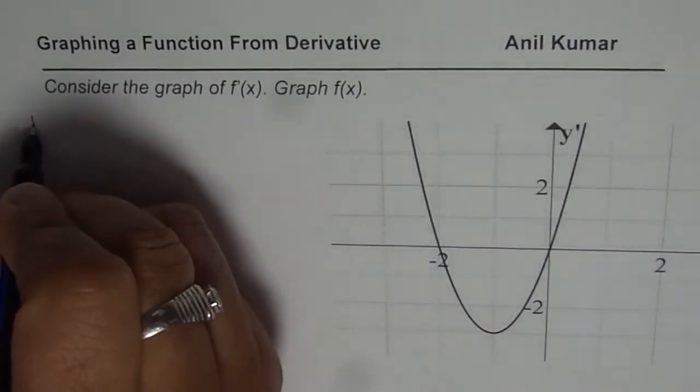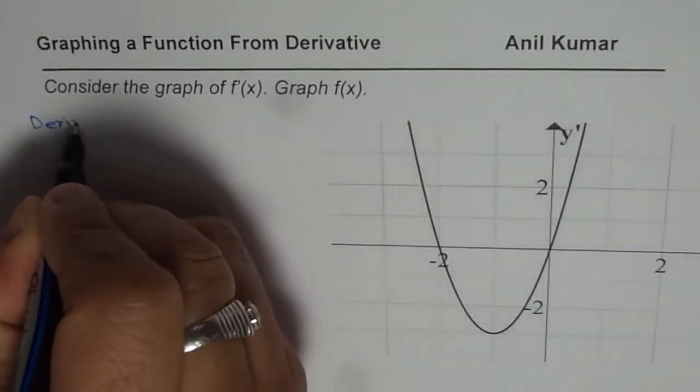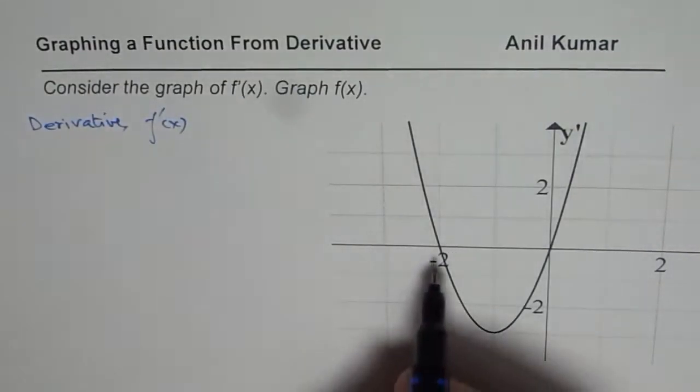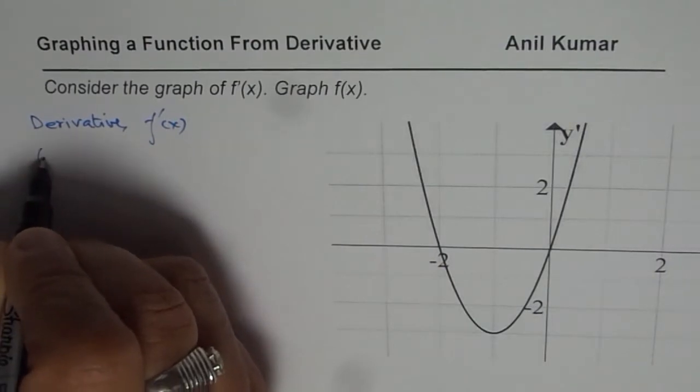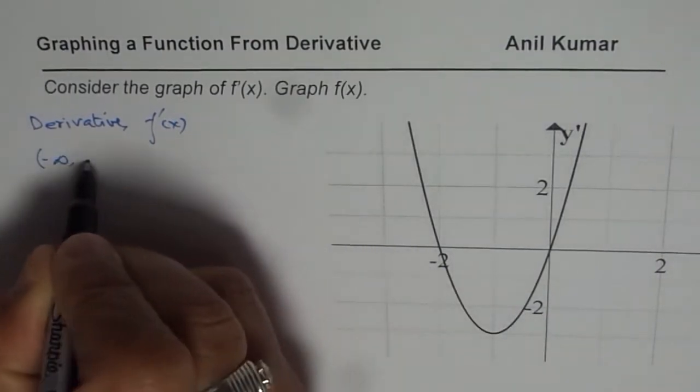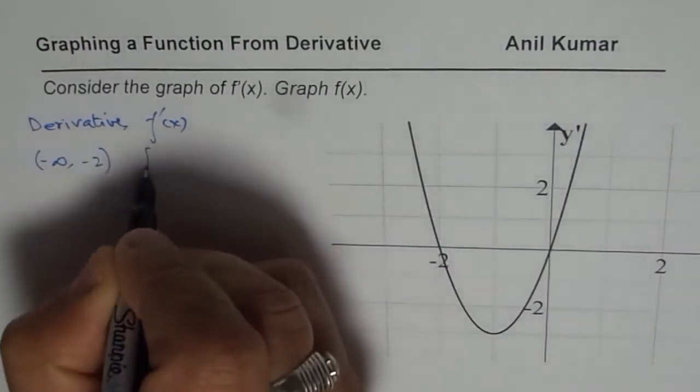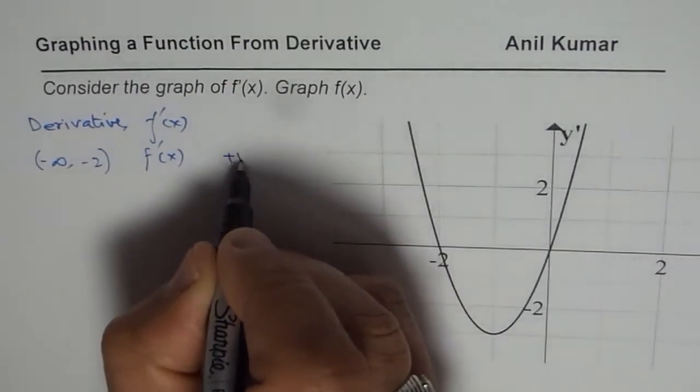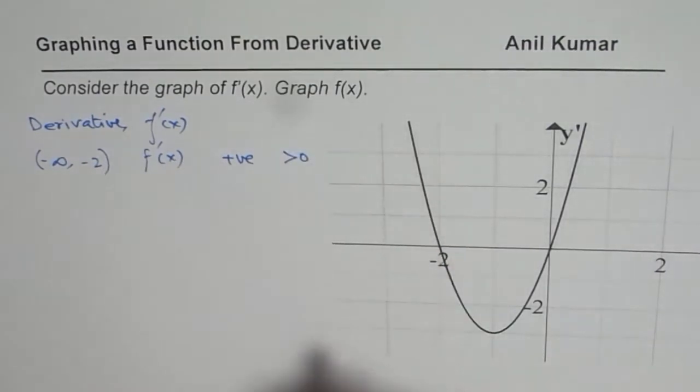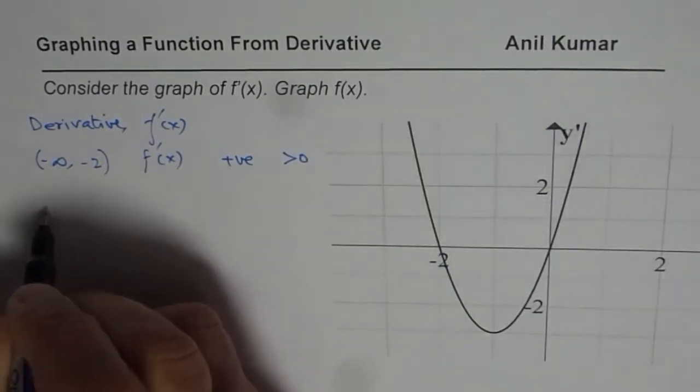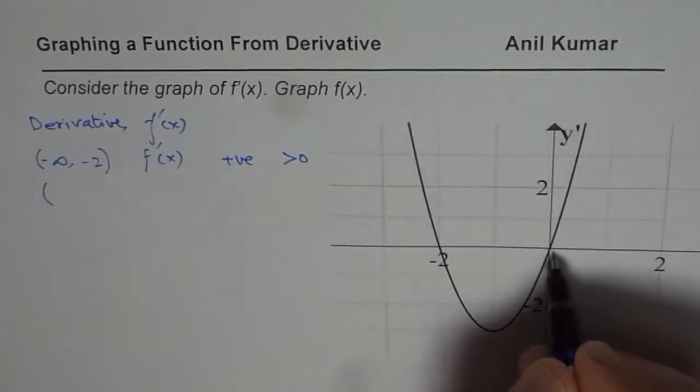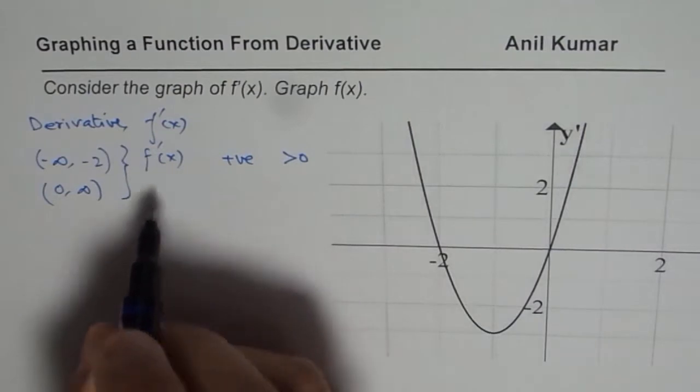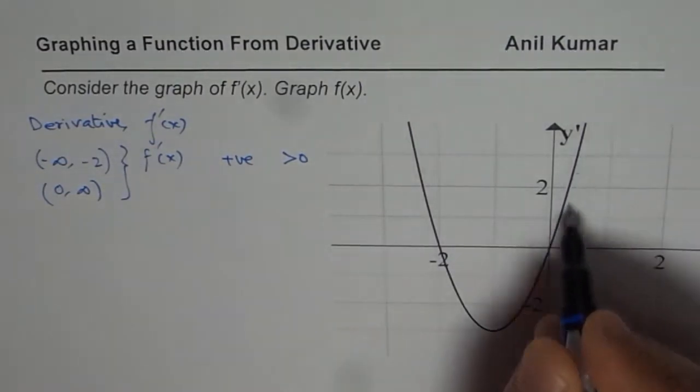Let us analyze the derivative first. The derivative f'(x) is given to us. From minus infinity to minus 2, f'(x) is positive, greater than 0. And it is also positive from 0 to infinity. In these two conditions, the derivative is positive.